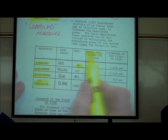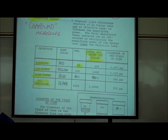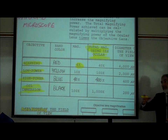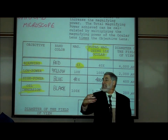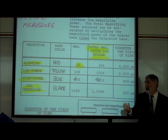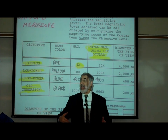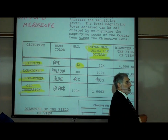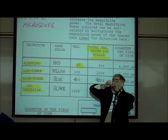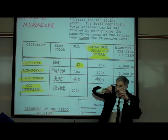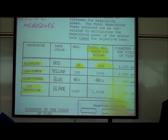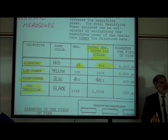Since your ocular lens magnifies 10 times, if you click the scanning objective lens into place — you should feel it click — the scanning magnifies four times and the ocular magnifies ten times, giving a total magnification of 10 × 4 = 40x.